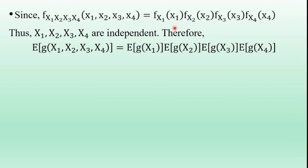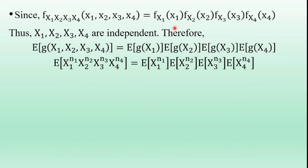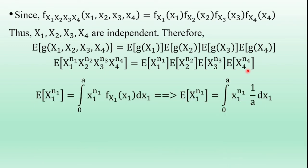Given the function g(x1, x2, x3, x4) = x1^n1 * x2^n2 * x3^n3 * x4^n4, and since x1, x2, x3, x4 are statistically independent, the expected value of a product of random variables equals the product of their individual expectations. That is: E[x1^n1 * x2^n2 * x3^n3 * x4^n4] = E[x1^n1] * E[x2^n2] * E[x3^n3] * E[x4^n4]. We will calculate each term separately and then substitute.